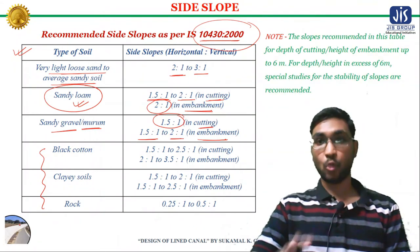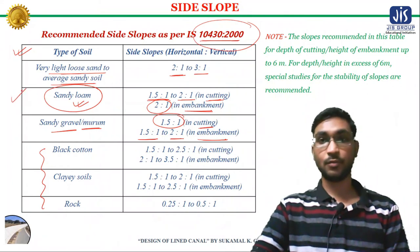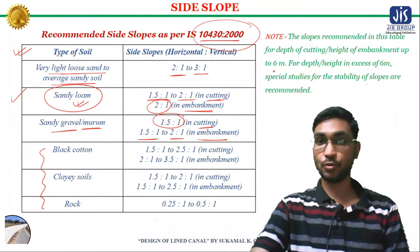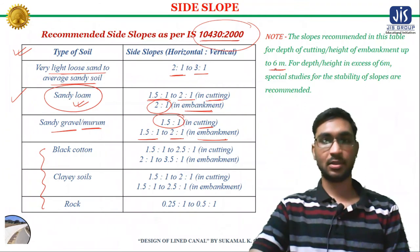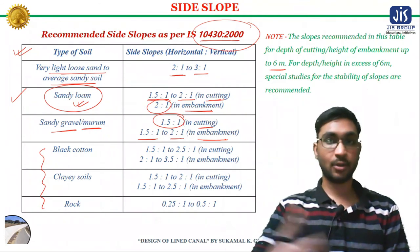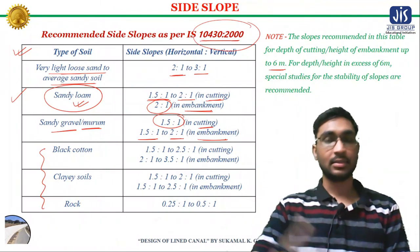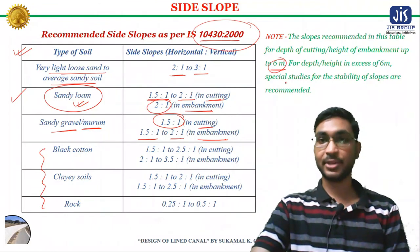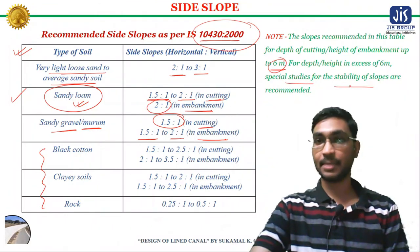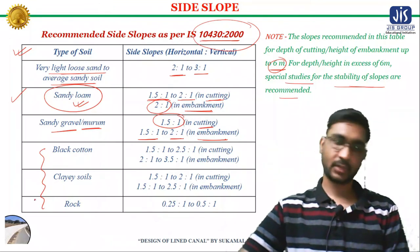The slope values recommended in this table apply for depth of cutting or height of embankment up to 6 meters. If the depth or height exceeds 6 meters, then a special study for the stability of slope is recommended.